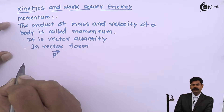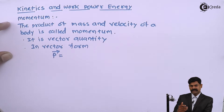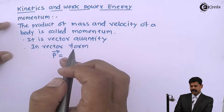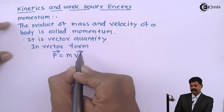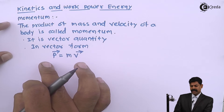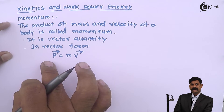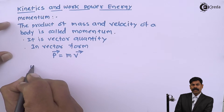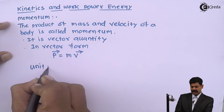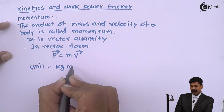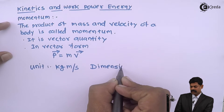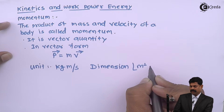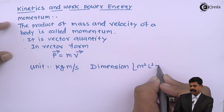P is the momentum, equals to the product of mass and velocity of the body — M is the mass of the body and V is the velocity. Since V is a vector, momentum is a vector quantity. Its unit is kg·m/s and the dimensions are M¹ L¹ T⁻¹.